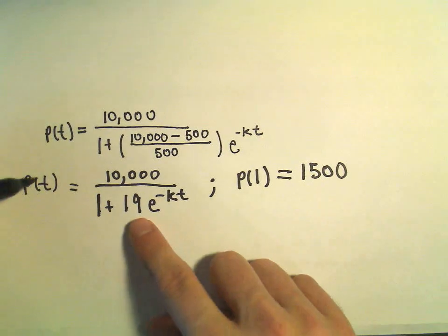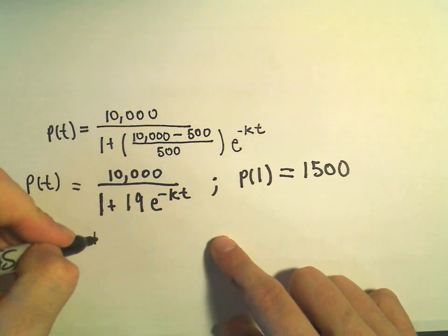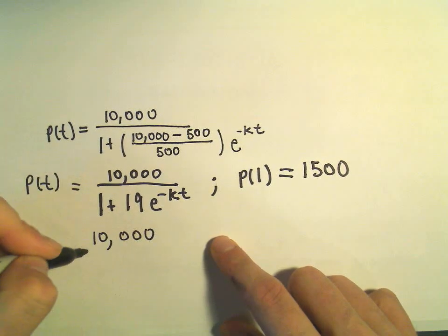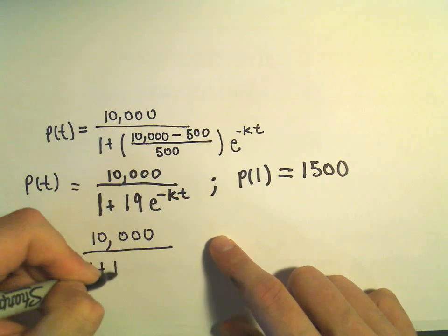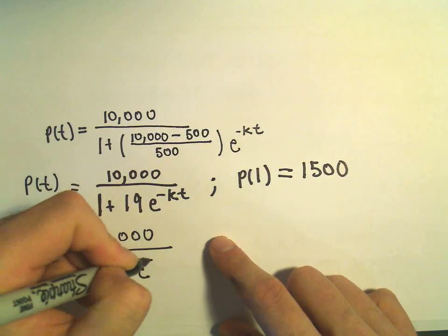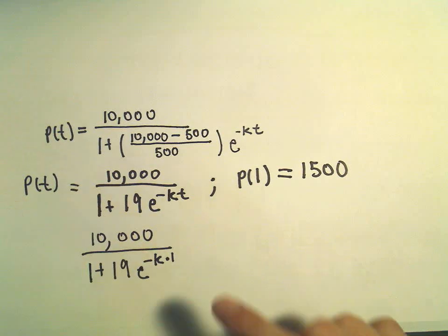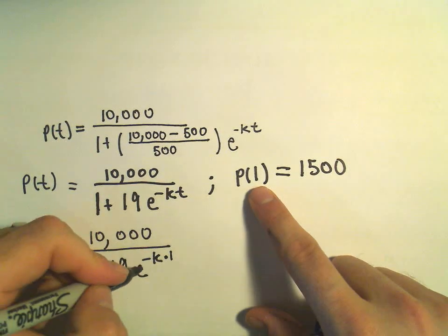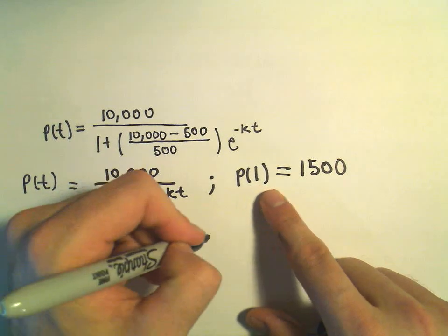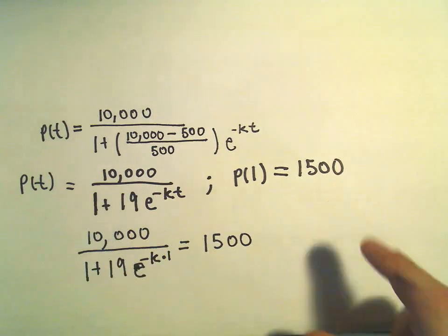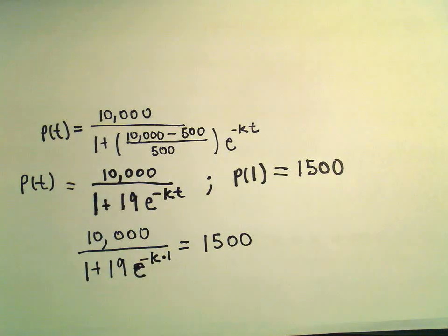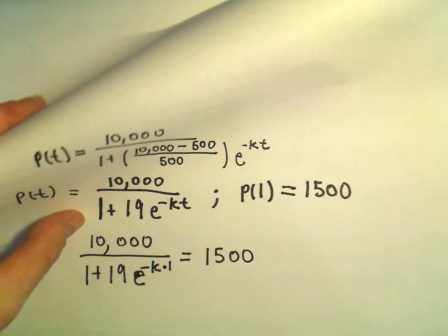And that's what I'm going to do. I'm just going to plug 1 in to my formula, so we would have 10,000 over 1 plus 19 times e to the negative k times 1, because we're just plugging 1 in for t. And we would set that equal now to 1,500. Okay, so now we're simply going to have to solve this for k.